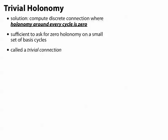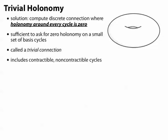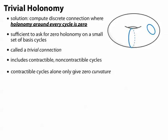In this case, this is something known as a trivial connection, so we want to compute a discrete trivial connection. Of course, it's really important to make sure that our basis includes both contractible cycles and non-contractible cycles, because if we just ask the holonomy to vanish around the contractible cycles,